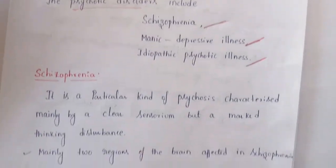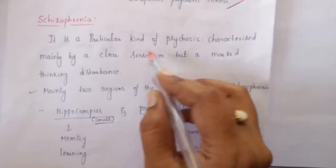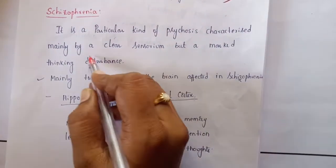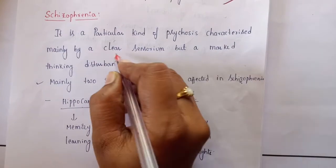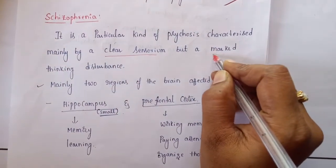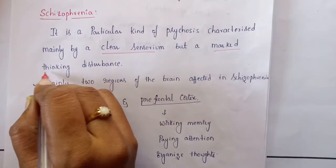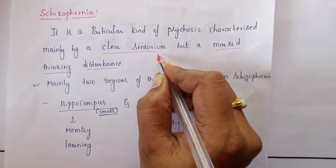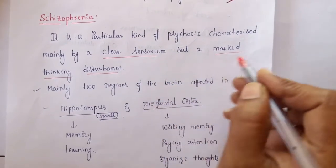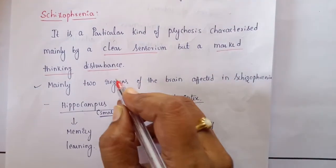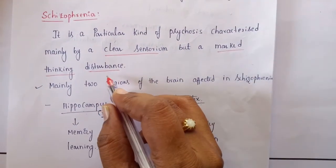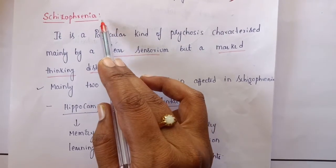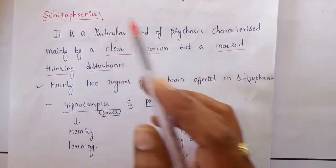Coming to schizophrenia, it is a particular kind of psychosis characterized mainly by a clear sensorium but marked thinking disturbances. The consciousness is clear, but there are marked disturbances in the thinking parameters of a person, as generally observed in schizophrenia.